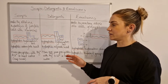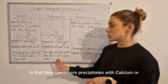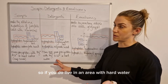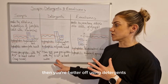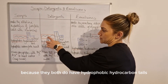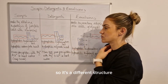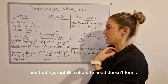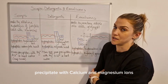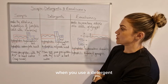Detergents are the alternative to soaps in that they don't form precipitates with calcium and magnesium ions, so if you live in an area with hard water you're better off using detergents. They both have hydrophobic hydrocarbon tails, but the detergent has a sulfonate head instead - a different structure - and that hydrophilic sulfonate head doesn't form precipitates with calcium and magnesium ions, so you don't get soap scum when you use a detergent.